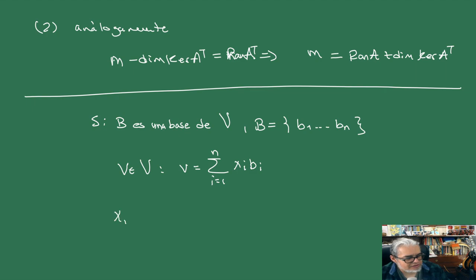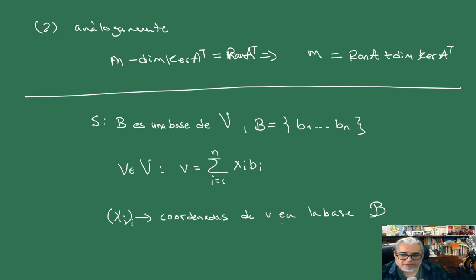Entonces cualquier b en B lo podemos escribir como la suma desde i igual 1 hasta n de xᵢ por los correspondientes bᵢ. Los xᵢ son llamados coordenadas: los vectores x₁, x₂, x₃ hasta xₙ son las coordenadas de b en la base B. Vamos a llamarle a b en la base B al vector (x₁, ..., xₙ).